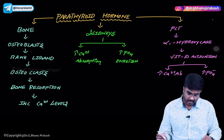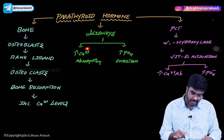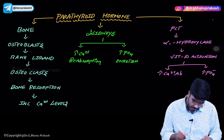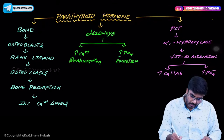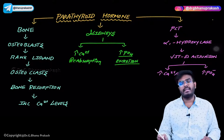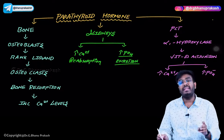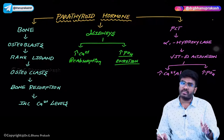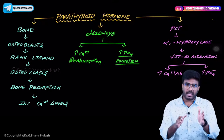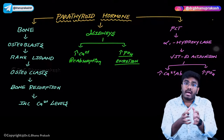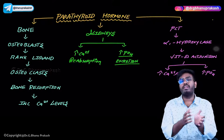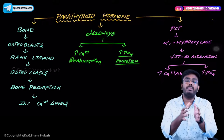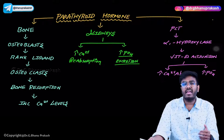PTH also acts on the kidneys, specifically on the nephrons. PTH increases calcium reabsorption — it is reabsorption, not just absorption. Remember PTH as the 'phosphate trashing hormone' — PTH trashes phosphate out of the body. If phosphate and calcium are in the same place, they attract each other since calcium is positive and phosphate is negative, forming bonds and precipitating as calcium phosphates.